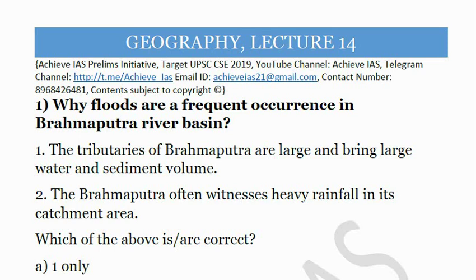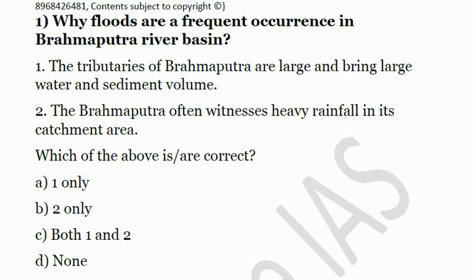Let's start our discussion. Today is the geography lecture, and this is lecture number 14. The first question is: why are floods a frequent occurrence in the Brahmaputra river basin? First, the tributaries of Brahmaputra are large and bring large water and sediment volume. Second, the Brahmaputra often witnesses heavy rainfall in its catchment area. Both statements are correct. The tributaries bring large amounts of water and sediment. There is heavy rainfall in the catchment area. Also, the Himalayas crossed by the Brahmaputra are composed of semi-consolidated rock material, making them very vulnerable to erosion. Due to this erosion, silt deposition in the riverbed takes place to a large extent, which causes the water to cross over its natural levees and causes floods.